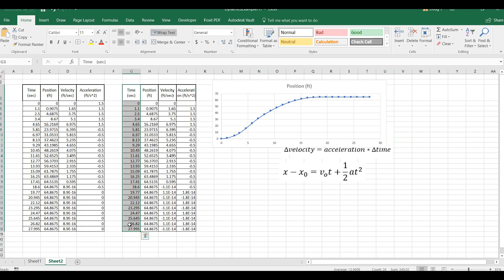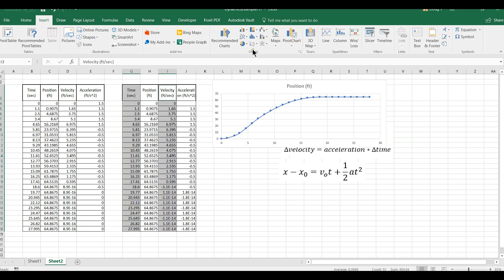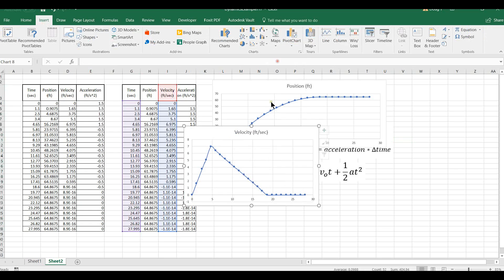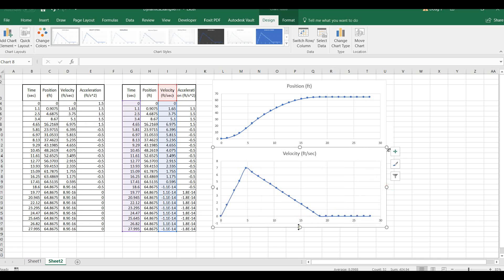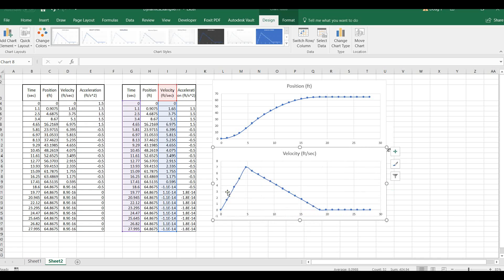Next, I'm going to highlight time. Hold down my control key, and then highlight velocity. Insert my velocity chart. To see how those go with one another, we have the velocity is increasing, the slope is getting steeper, and then my velocity is decreasing. My slope is decreasing until the slope of zero, as we're not moving, is a velocity of zero.